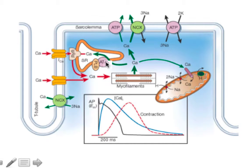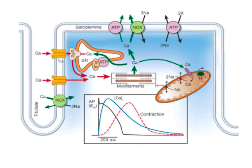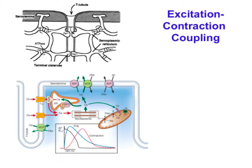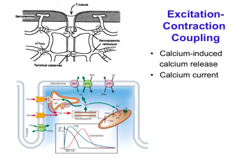A calcium pump in the sarcoplasmic reticulum called the SERCA pump—the sarcoendoplasmic reticulum calcium ATPase—takes the calcium back up into the SR until a new beat comes along. The sequence is: action potential first, then calcium transient, then force of contraction. This process is called calcium-induced calcium release, and it depends on that slow inward calcium current.